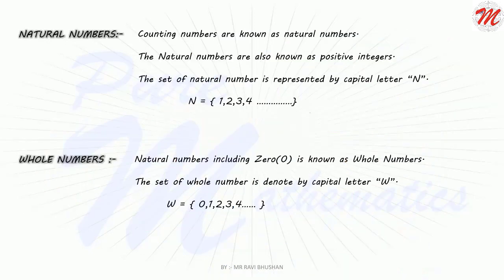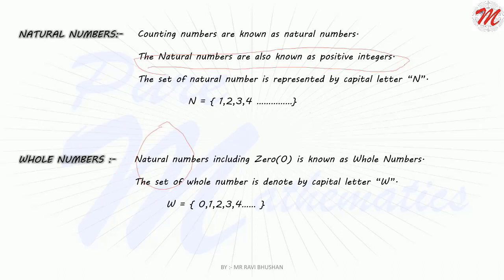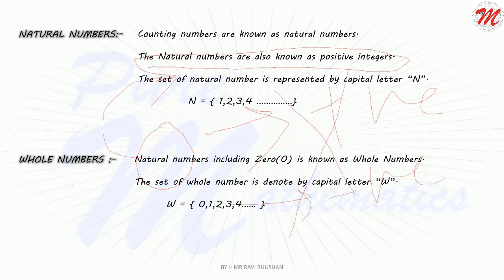What is a natural number? All the counting numbers are called natural numbers. A natural number is always a positive integer, and the set of natural numbers is represented by the capital letter N. Zero is not a natural number. This confusion often arises in students' minds — they know zero is not a natural number, but why? Zero is neither positive nor negative, so this number does not come under the category of natural numbers.